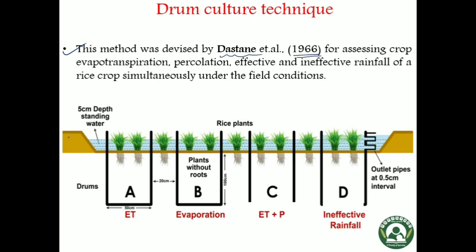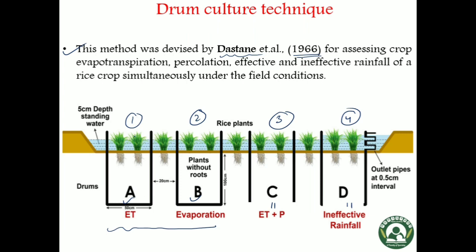In this method, four drums are installed in a rice field. Out of these four drums, two have a bottom, but the third and fourth drums have no bottom. Normal rice crops are also grown in these drums along with the surrounding field, and a water level of 5 centimeters is maintained in the drums as well as in the field.